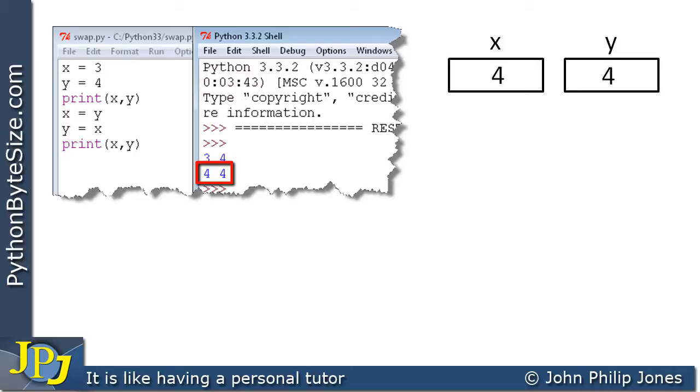When in fact, it should have been 4, 3. Now the problem that existed here is when we copied what was in y to x, we lost the original value of x, which was 3.